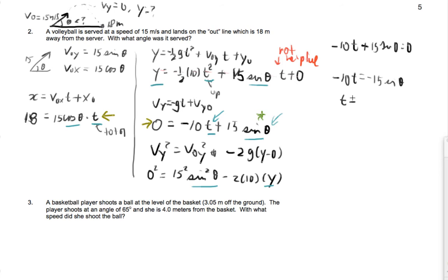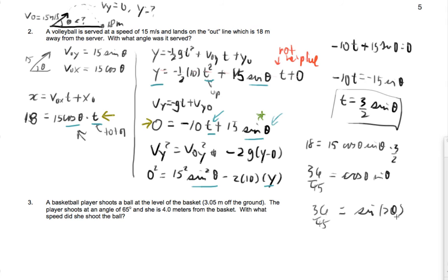I can simplify. So I'm going to end up getting that t is three halves times the sine of theta. And I'm going to put that into here. So I'll get 18 equals 15 cosine theta sine theta times three halves. So I'm going to end up getting here 36 over 45 equals cosine theta sine theta. And I'm going to go back to my trig formula.